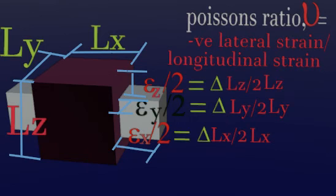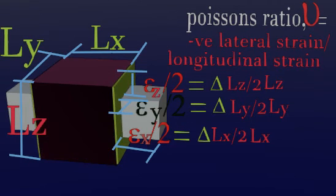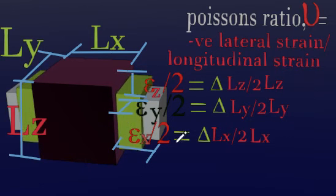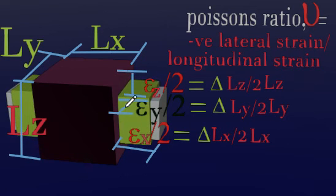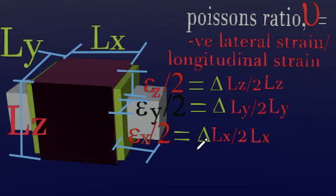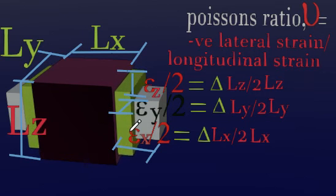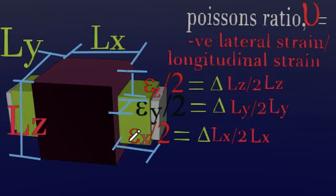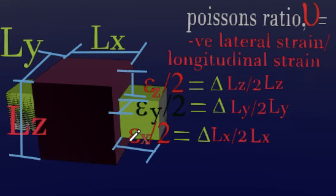If we have a material deforming as shown, notice the major axis of elongation — in this case the x-axis. The other directions are minor. So in this particular animation, we assume the major axis of deformation is the x-axis and the other two directions are minor. When a material deforms along a major axis, there is bound to be lateral shortening in the other two directions.